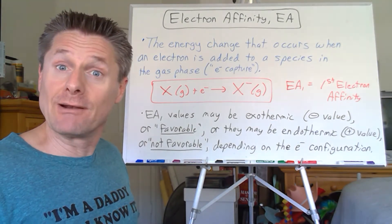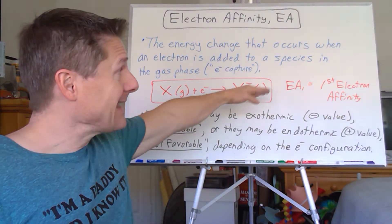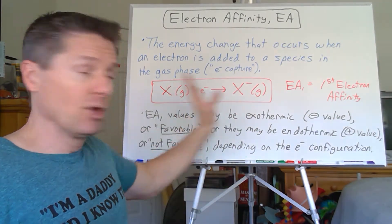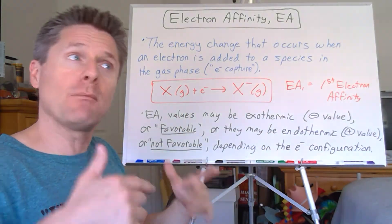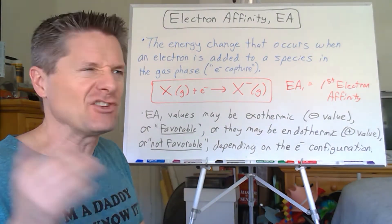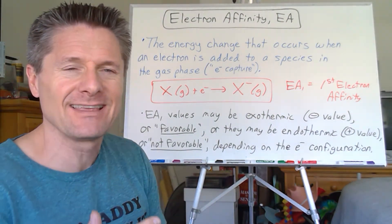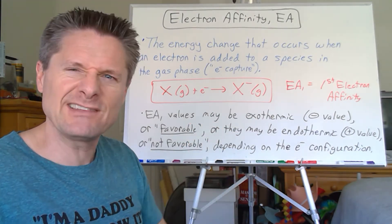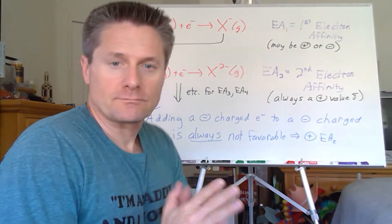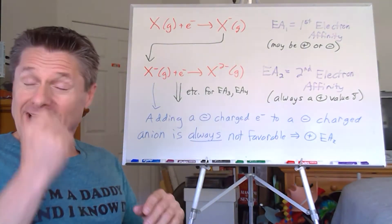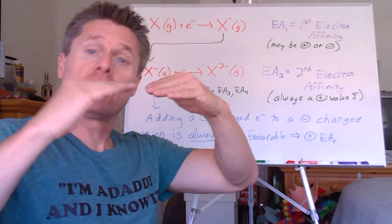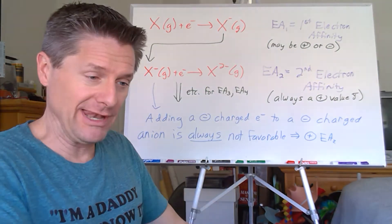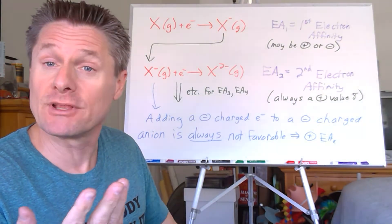Now let's look at what happens if we add a second electron for all of them. We'll look at some specific values and talk about why those values change. The trends are not nearly as nice as ionization energy because of the changing electron configurations. Kind of like we did with ionization energy — you could go I1, I2, I3 — and it took successively more energy each time you pulled a negative particle away from a positive nucleus.